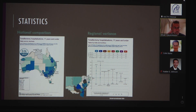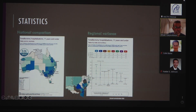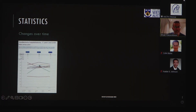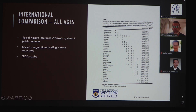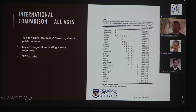In Australia, we have variable rates of adenotonsillectomy depending on where you live. Rates are very low in the middle of the country — mainly desert — and higher in urban centers. Rates of adenotonsillectomy have not changed over time. Internationally, rates are highest in wealthier countries with higher GDP per capita and those with community-based regulation of surgery. Countries with highly regulated or government-controlled healthcare access have lower rates. Even the UK and New Zealand, though relatively wealthy, have lower rates of tonsillectomy compared to Norway, Luxembourg, the US, Australia, and Germany.